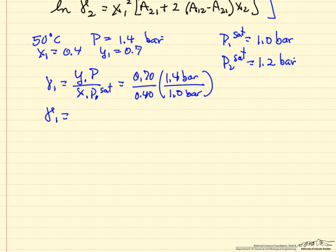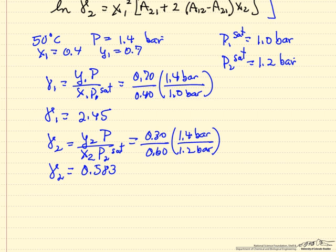Gamma 1 equals 2.45. I have done an identical type calculation and I have gotten gamma 2. Now I have gamma 1 and gamma 2.